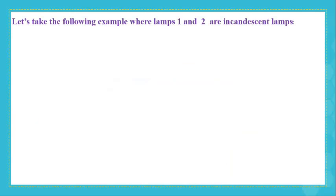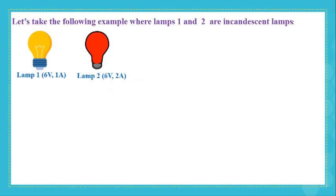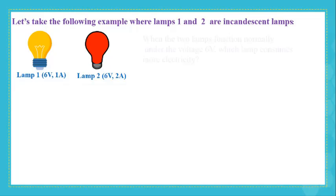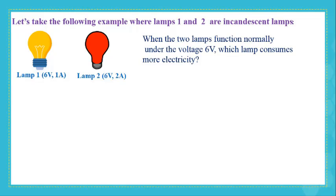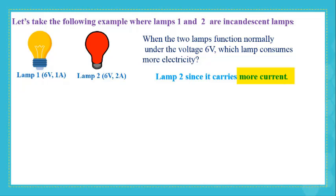Let's take this example where lamps 1 and 2 are incandescent lamps. Each lamp carries a certain inscription as shown in the figure. When the two lamps function normally under 6V, which lamp will consume more electricity? Lamp 2. Why? Because it carries more current.